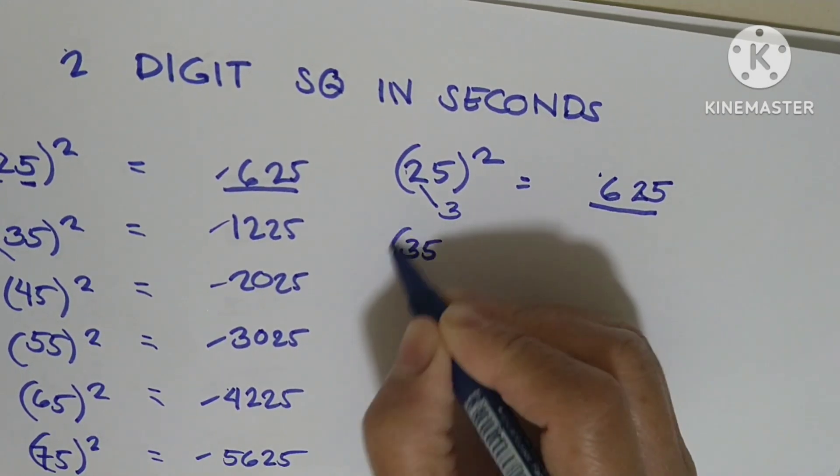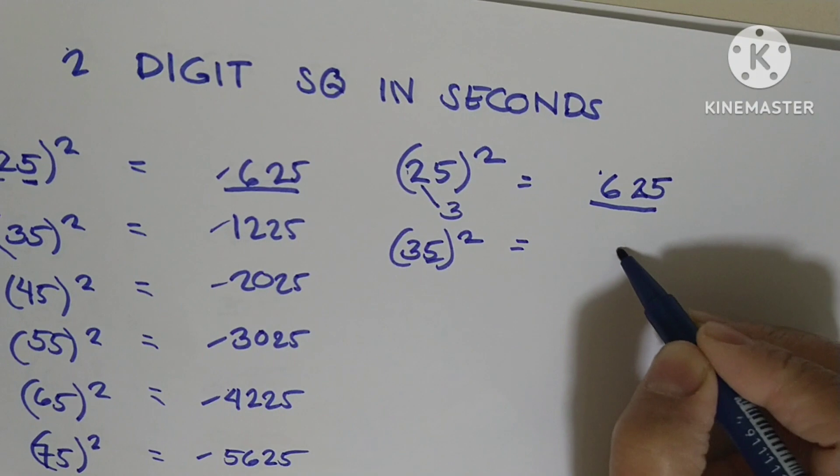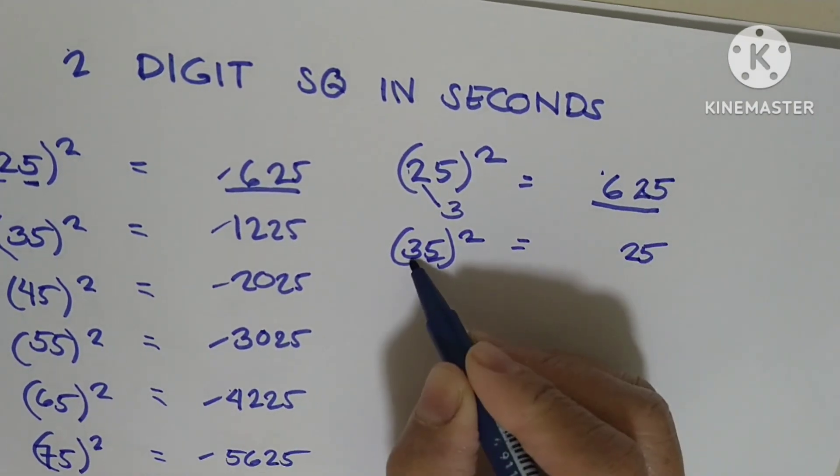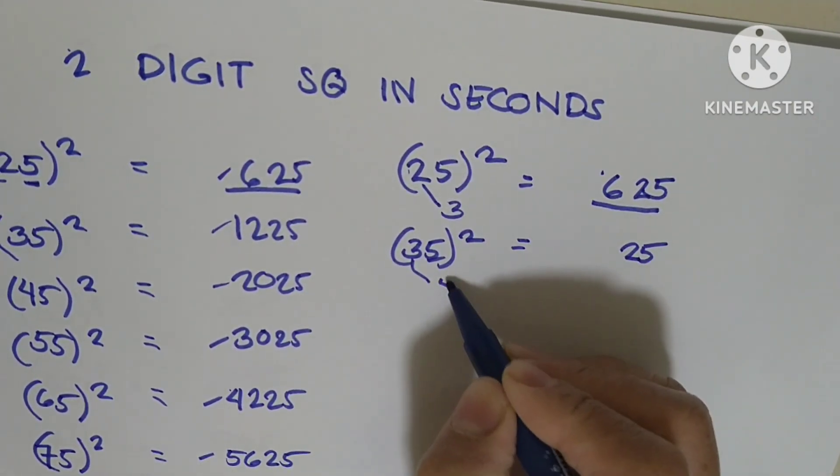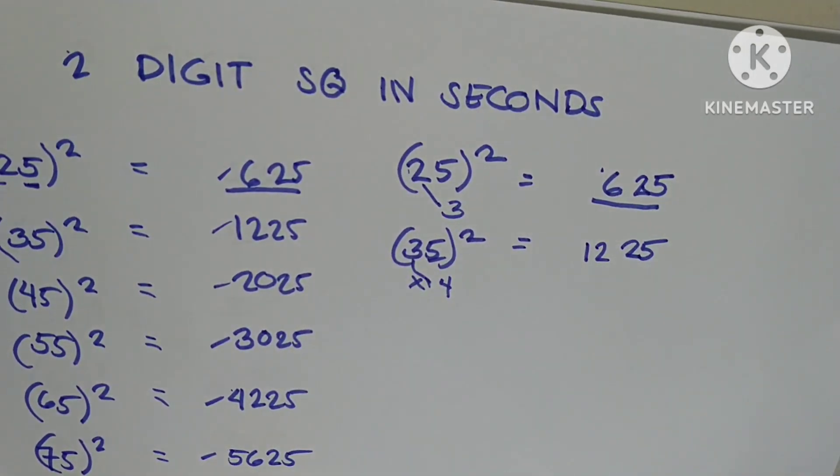And then the next one, 35 to the power of 2. Same thing: 5 times 5 is 25. What is the number next to 3? It's 4. So multiply 3 times 4, which is 12. As easy as that.